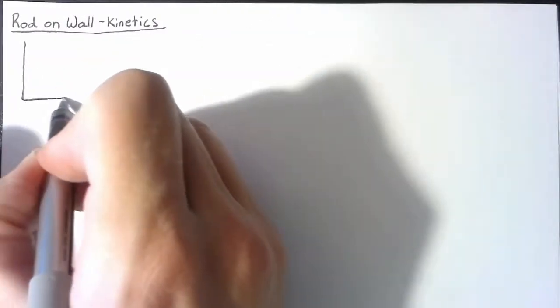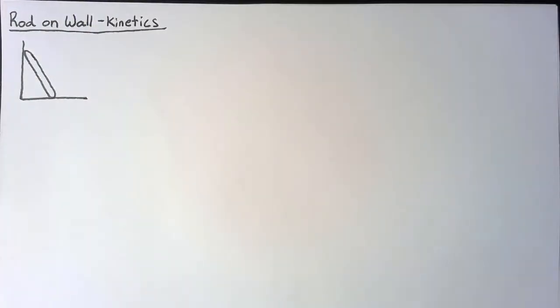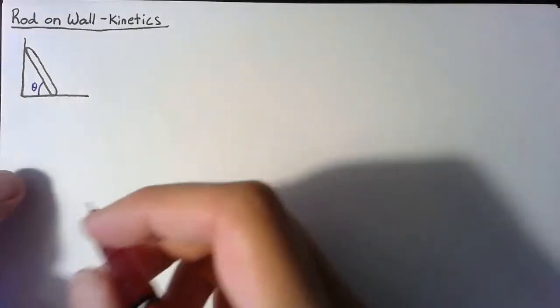We draw the rod leaning against the wall, but this time what we're interested in is the forces rather than the velocities and accelerations we used last time. We still define theta because we'll need it, but really what we're interested in are the two normal forces — one from the wall pushing to the right and one from the floor pushing up — and then the force of gravity. I'm going to call them Na, Nb, and m times g.